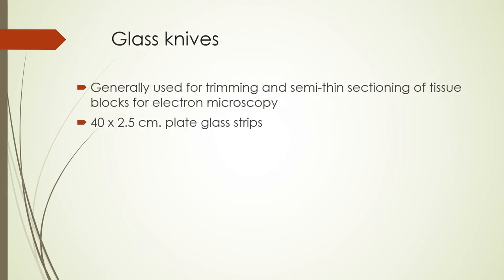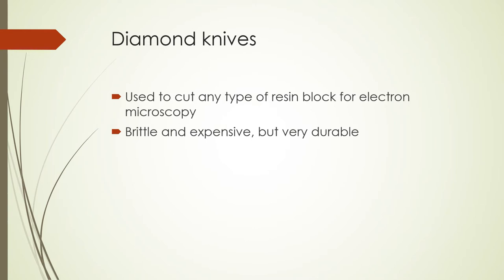Next we have glass knives, which are generally used for trimming and semi-thin sectioning of tissue blocks for electron microscopy. They are 40 by 2.5 centimeter plate glass strips — they look almost like cover slips but not in the same manner. Lastly, we have diamond knives, the most expensive type. They are used to cut any type of resin block for electron microscopy. They are brittle and expensive, but very durable.